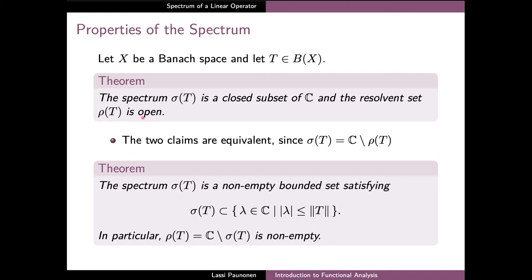In addition, the second result shows that the spectrum of a bounded linear operator is a bounded set, which is contained in a closed disk on the complex plane centered at the origin and having radius equal to the norm of T. The second result also states that both the spectrum and the resolvent of T are non-empty. The resolvent set not being empty follows immediately from the boundedness of the spectrum.